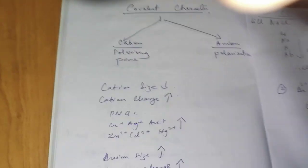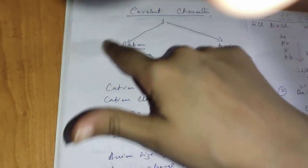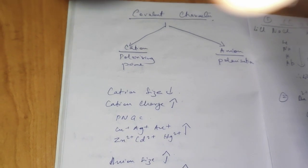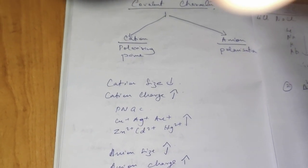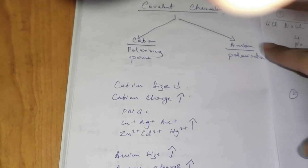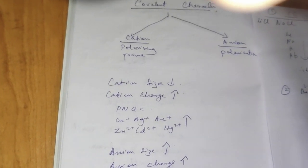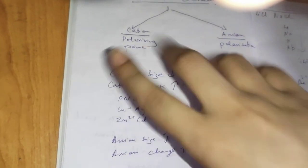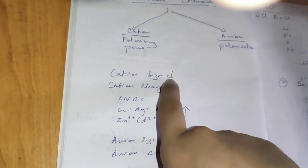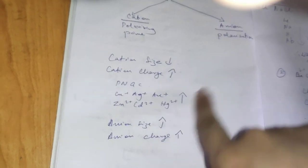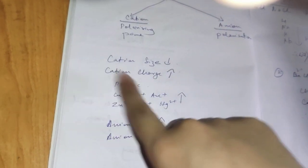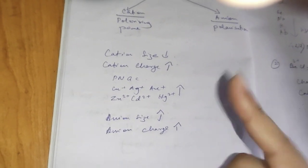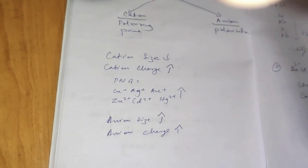For covalent character to be stronger, the cation should have very high polarizing power, and the anion should undergo polarization. For the cation, the size should be smaller and the charge should be higher. Also, the pseudo-noble gas configuration (PNGC) elements — with configuration ns²np⁶nd¹⁰ — will have excessively high covalent character.